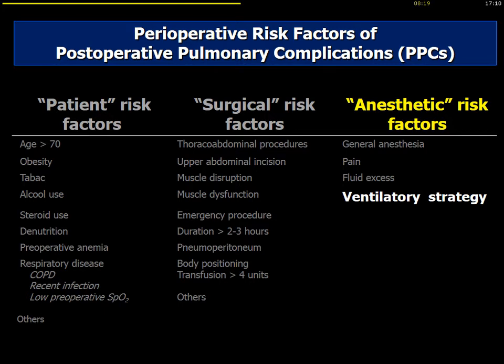How can we improve outcomes for surgical patients by decreasing postoperative pulmonary complications? We can try to modify patient risk factors such as alcohol, tobacco use, and medications. In my experience, please try to have the best surgeon — I think this is the most important variable in multivariate analysis. Regarding anesthesia risk factors, you can use locoregional anesthesia, limit fluids, and optimize hemodynamics. But the ventilatory strategy is the debate of today.